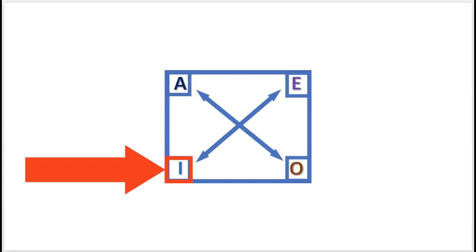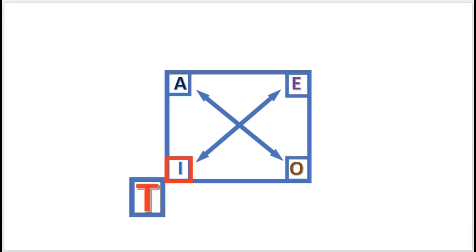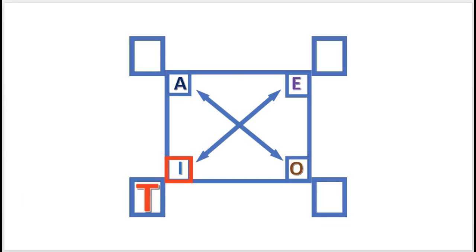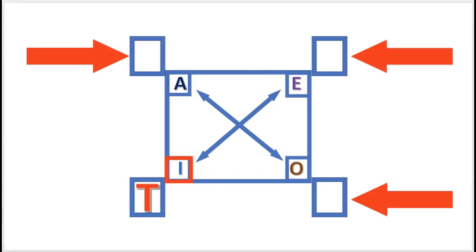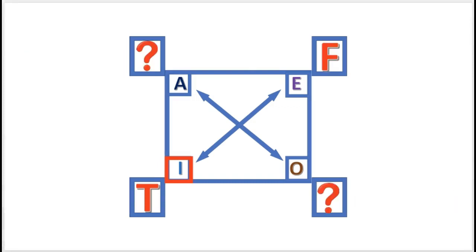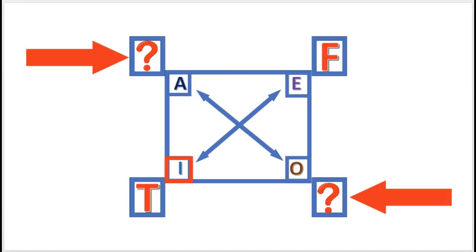Next practice problem: if I is true, what is the truth value for the other propositions? E is false. A and O are undetermined.